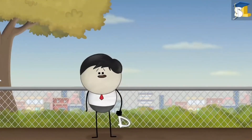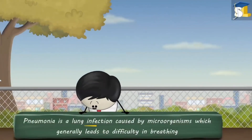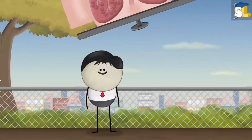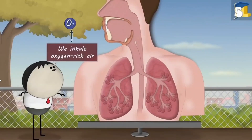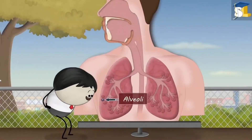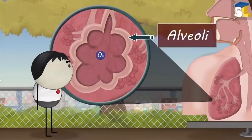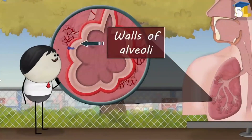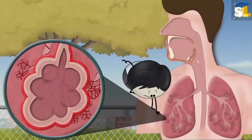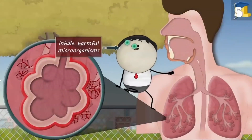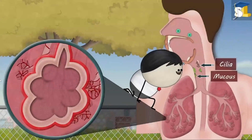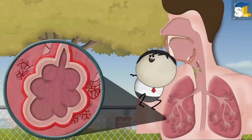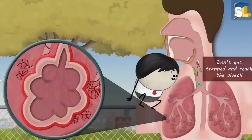Pneumonia is a lung infection caused by microorganisms which generally leads to difficulty in breathing. The oxygen through the walls of alveoli diffuses into our blood. However, sometimes we also inhale harmful microorganisms. Mostly, the cilia and mucus in our respiratory tract trap these microorganisms, which are then expelled while coughing. But sometimes the microorganisms don't get trapped and reach the alveoli.